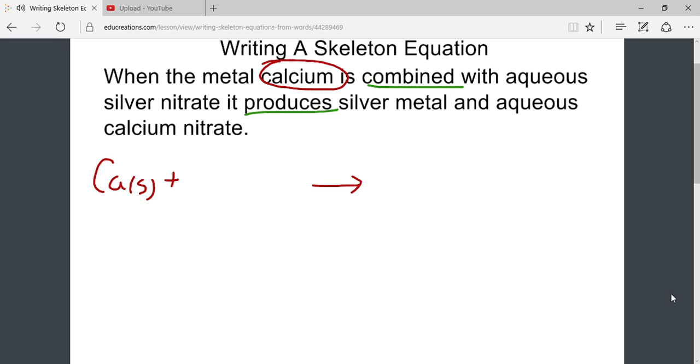The other reactant described is aqueous silver nitrate. This is an ionic compound. This lesson assumes that you know how to identify charges and write formulas for ionic compounds at this point.